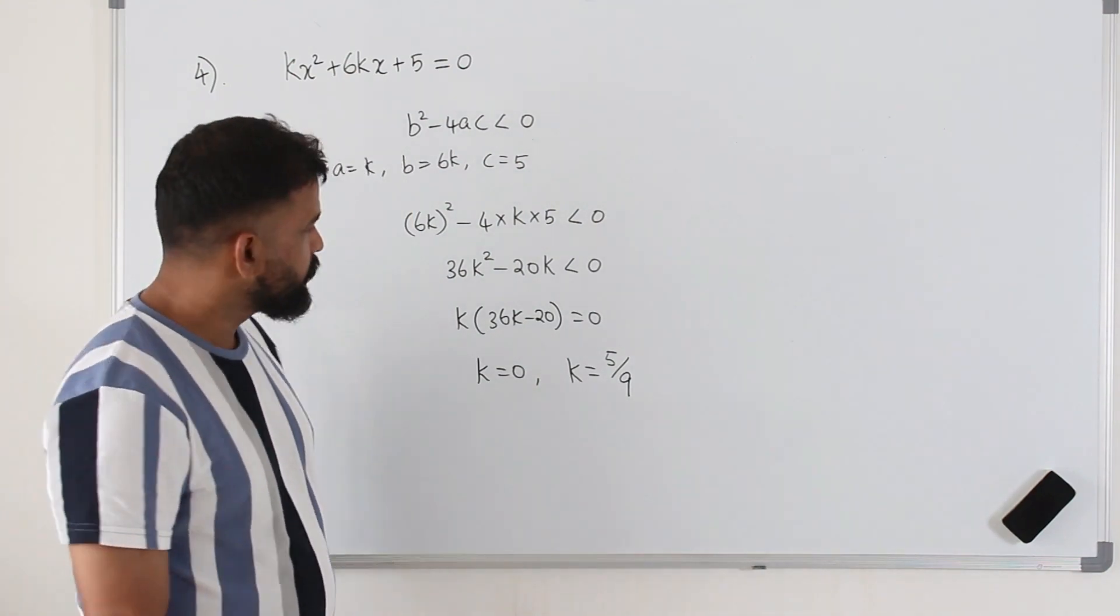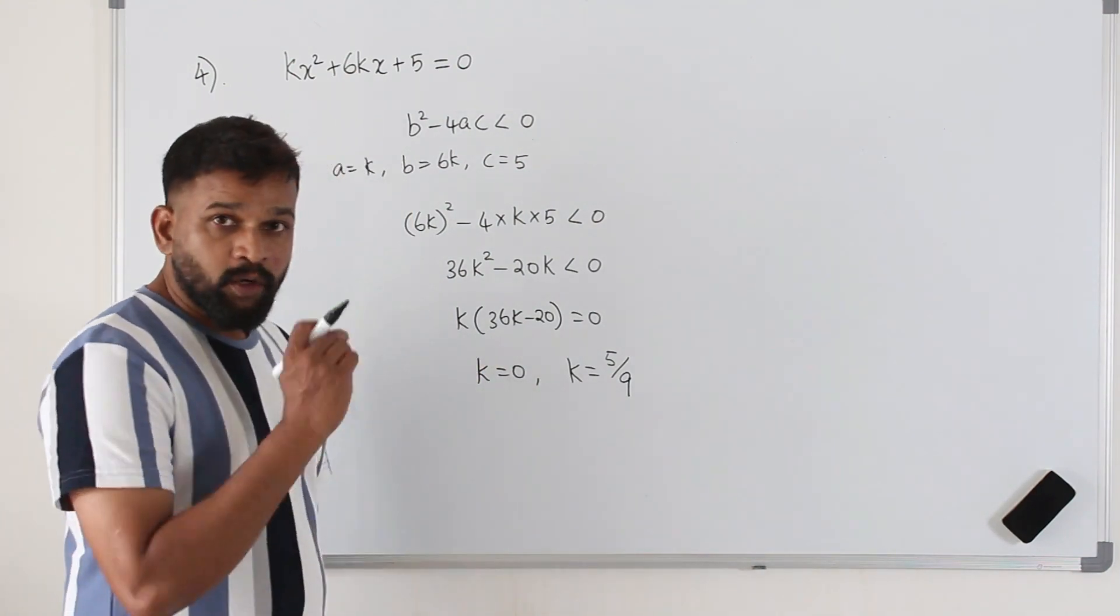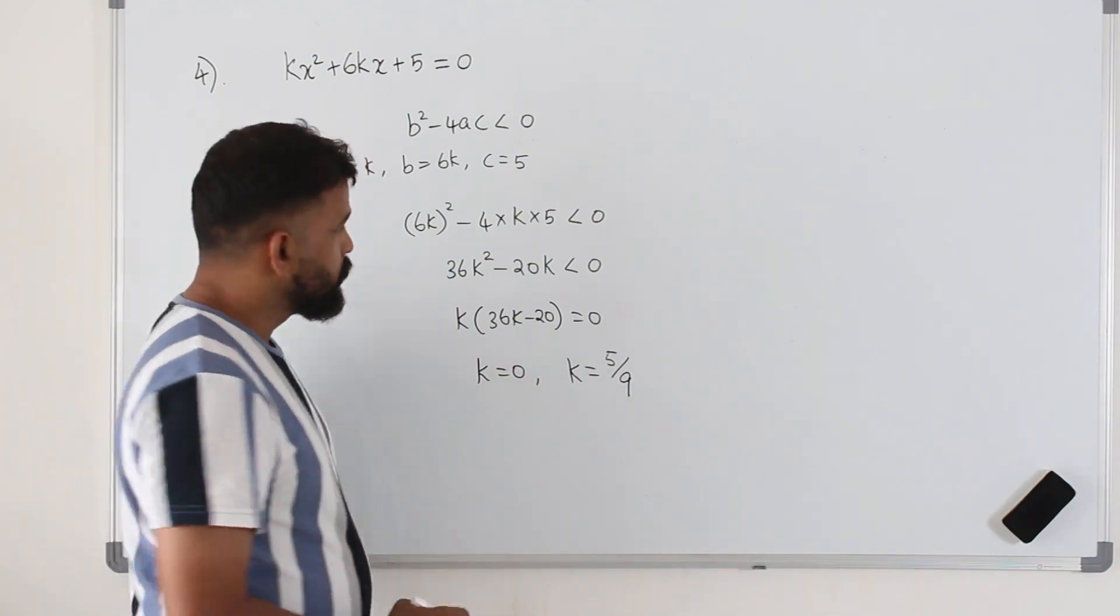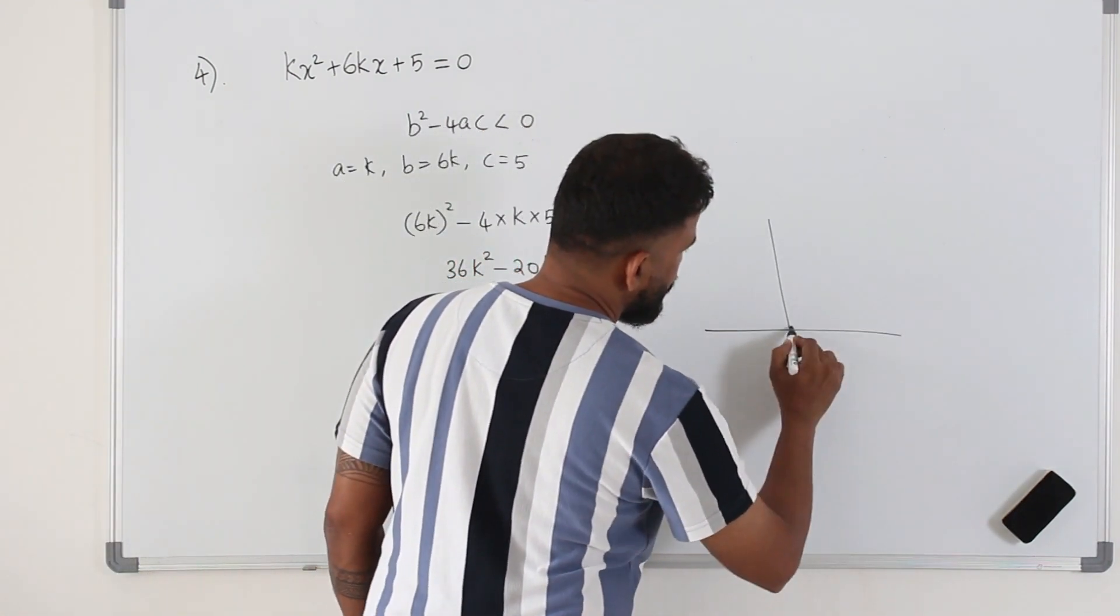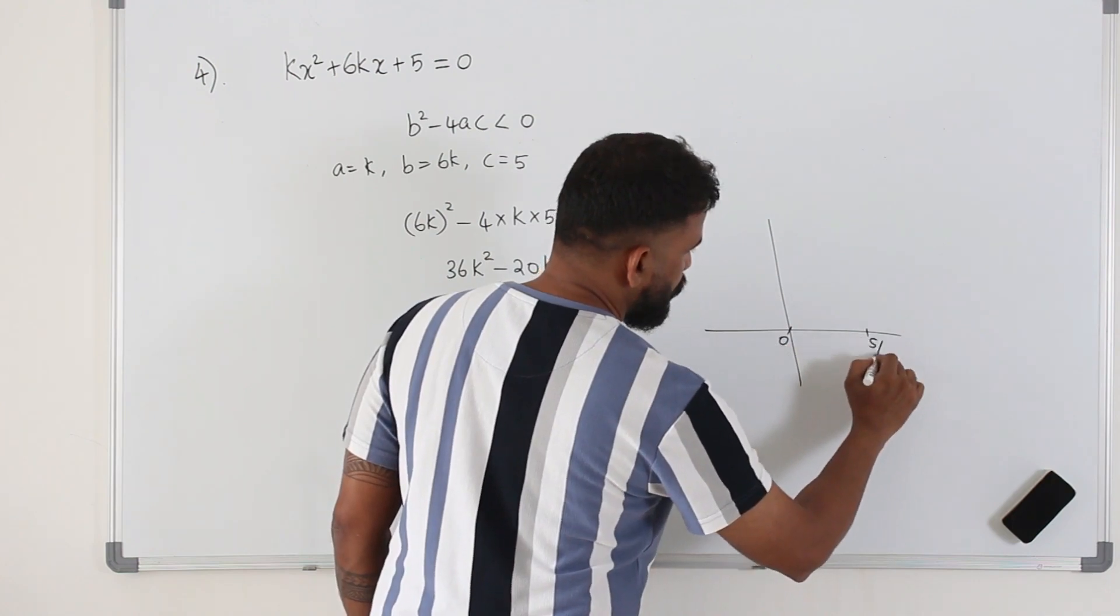Always write the simplified form. That's not the solution. That's the two k values. If you draw a little diagram, k is 0, 5 over 9.